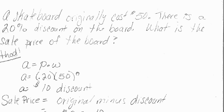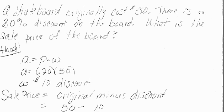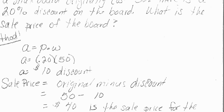Most students like this method because it's easier to follow. So if I multiply p times w, I get 10. So remember, sale price is original minus discount. I'm going to do 50 minus 10, so that means the sale price of a skateboard is $40.